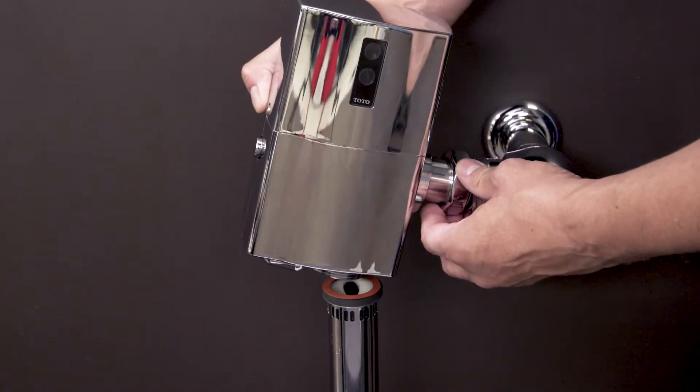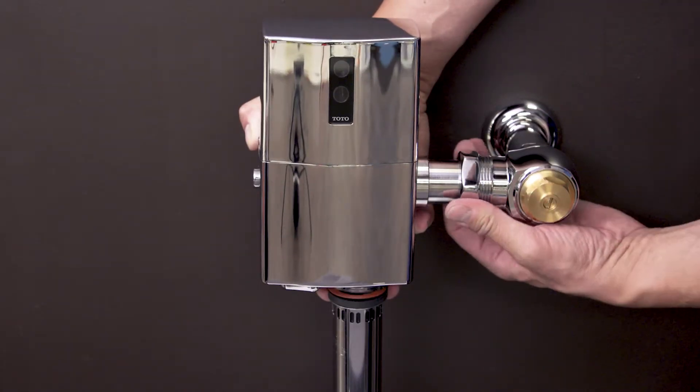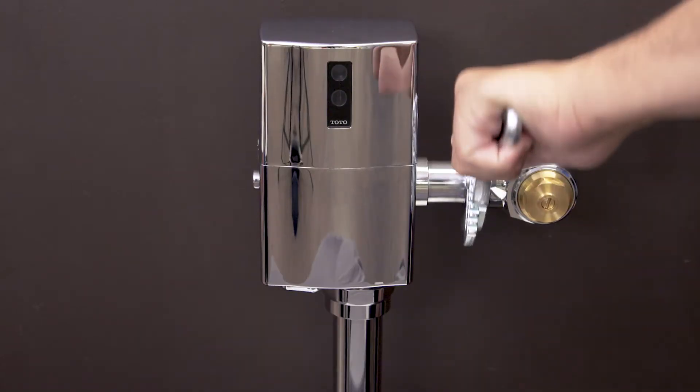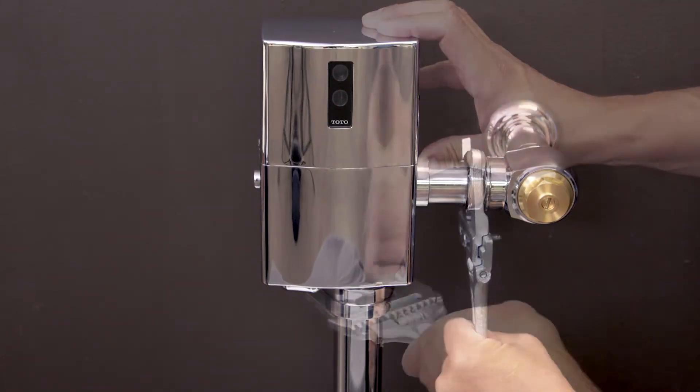Replace the flushometer body and hand tighten the nuts. Next use the smooth jaw wrench to secure the body.